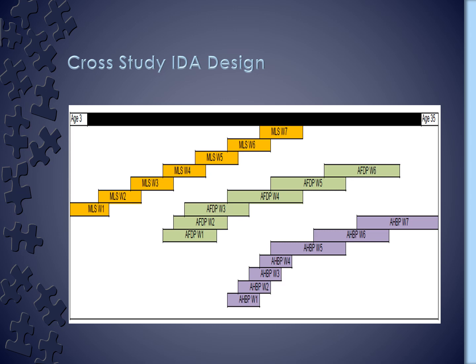The cross study IDA design looks something like this. Across the x-axis, this is age running from ages 3 to 35. The gold study is the Michigan Longitudinal Study, contributing data from age 3 up to about age 17. Green in the middle is the Adolescent and Family Development Project from Arizona, which started around age 10 and went up through the late 20s. And the purple is the Alcohol and Health Behavior Project from Missouri, which started with college freshmen and followed them annually, so they were in their thirties by the time we started this integrated data analysis project. We couldn't have looked at this age span in any one particular study, but we're able to look at different combinations of these age spans to understand developmental trajectories.